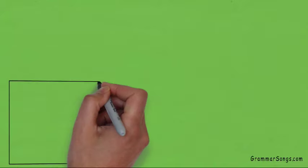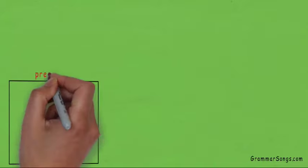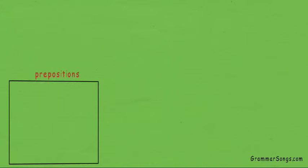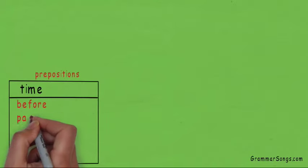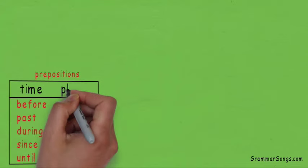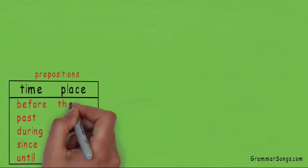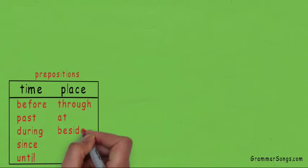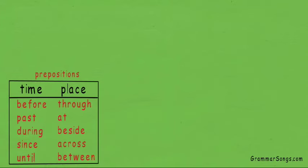Let's practice making some complete sentences more specific by adding prepositional phrases. There are many prepositions to choose from, but we will practice using a small list of common prepositions. Some prepositions of time are before, past, during, since, and until. Some prepositions of place are through, at, beside, across, and between. Let's get started.